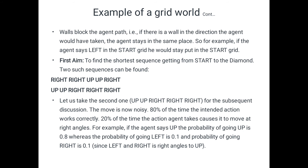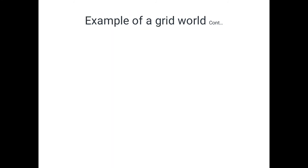For the subsequent discussion, the move is noisy. Eighty percent of the time the intended action works correctly; the remaining twenty percent of the time the agent moves at right angles. For example, if the agent says 'up', the probability of actually going up is 80%, the probability of going left is 10%, and the probability of going right is 10%. That is the probability calculation here.